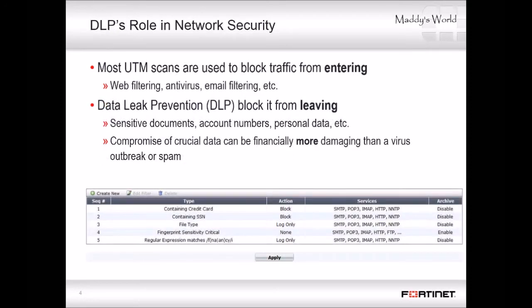FortiGate has other features such as IPS and antivirus that can detect and block files. What makes DLP different? Traditional firewalls and first-generation UTMs were designed to prevent attacks from getting into your network. Web filtering is only applied to traffic coming in. Despite best practices to apply it in both directions, many people apply antivirus and email filtering only to traffic coming in. But DLP is to prevent specific data from getting out.